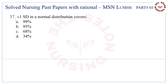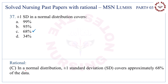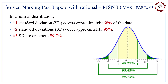Question number 37. Plus or minus 1 SD in a normal distribution covers — the correct answer is C — 68%. In a normal distribution, plus or minus 1 standard deviation covers approximately 68%, plus or minus 2 about 95%, and plus or minus 3 about 99.7%.